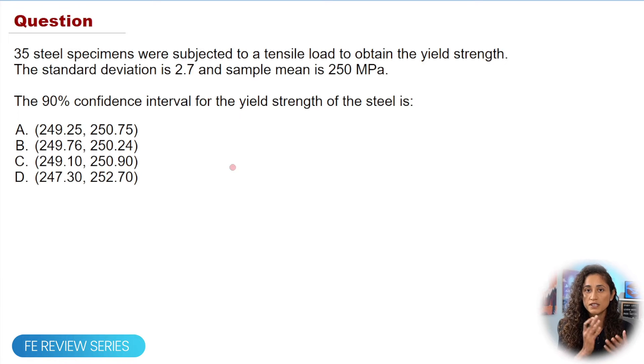Whenever you see confidence interval, always think about the Z distribution and the T distribution. So go to the reference handbook and type confidence interval and then those two equations will show up on the reference handbook.